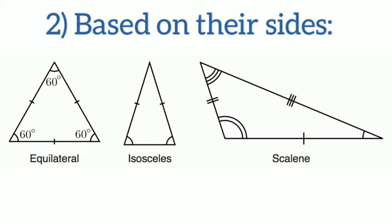The third type is not that common, but it's scalene triangle. In scalene, all sides are different and all angles are also different.